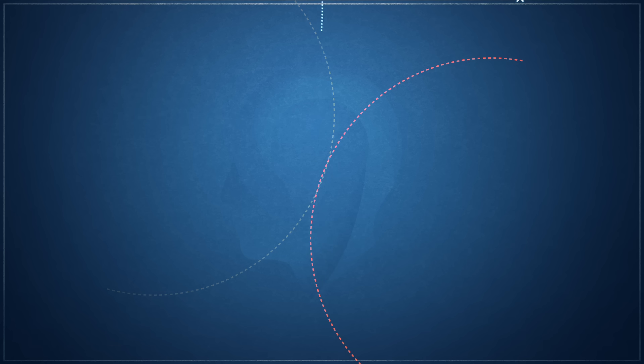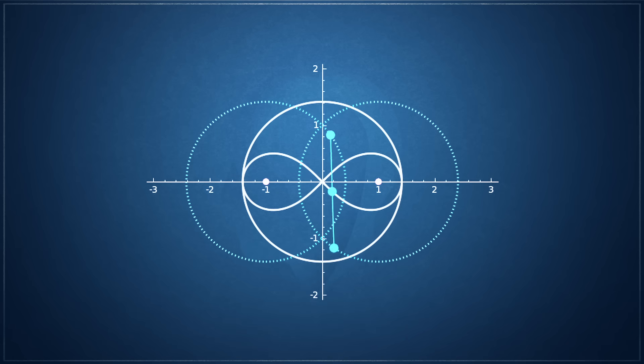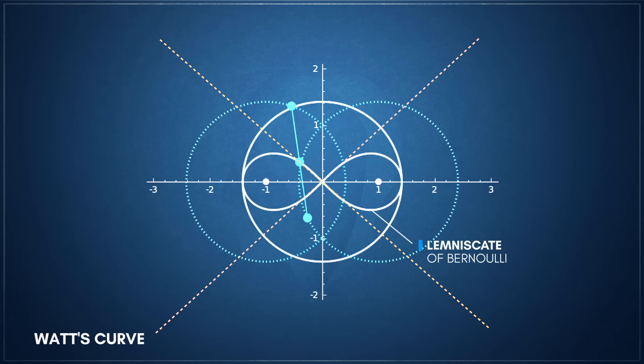However, because the fixed pivots are separated, these arcs curve in opposite directions. The midpoint of the central link is therefore simultaneously pulled inward by one arc and pushed outward by the other. These opposing curvatures largely cancel each other out in the center of the mechanism's travel. This path, however, is not a straight line, but a figure-eight-shaped curve that is a lemniscate of Bernoulli called the Watt's curve. Despite being a curve, the central section of this path is remarkably flat, and provides an excellent approximation of straight-line motion over a considerable distance.